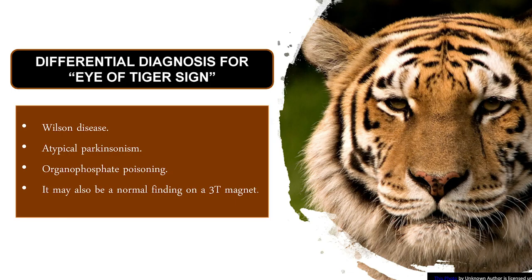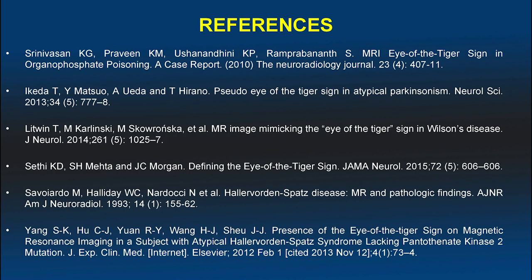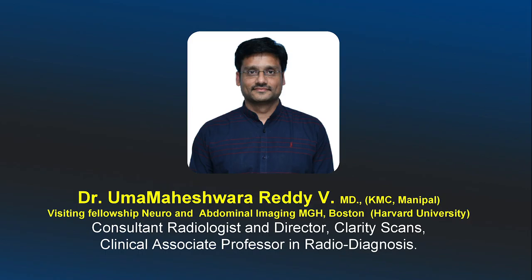The eye of tiger sign on the globus pallidus can also be seen in Wilson's disease, atypical parkinsonism, organophosphate poisoning, and in normal brains on 3 Tesla imaging. Take-home points: always keep differentials in mind whenever you see the eye of tiger sign, and understand the pathophysiology and signal changes resulting in this sign. Thank you.